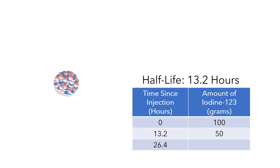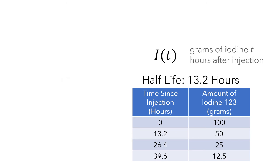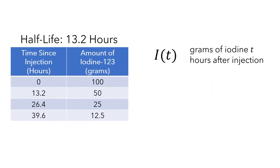After 26.4 hours, that is another 13.2 hours, there would be half of the 50 grams left. And after 39.6 hours, another 13.2 hours, there would be half of the 25 grams left. We'll write I to represent the grams of iodine left T hours after the injection. Over the first 13.2-hour interval, we lose 50 grams of iodine. Then over the next 13.2-hour interval, we lose 25 grams. And over the third 13.2-hour interval, we lose 12.5 grams.